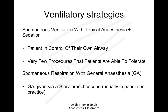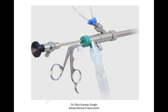Another strategy is using spontaneous respiration with general anesthesia. This is often done in pediatric patients using a ventilating bronchoscope like the Storz bronchoscope. The ventilating bronchoscope has a diaphragm through which you can put biopsy forceps, and you can attach a normal breathing circuit to it.